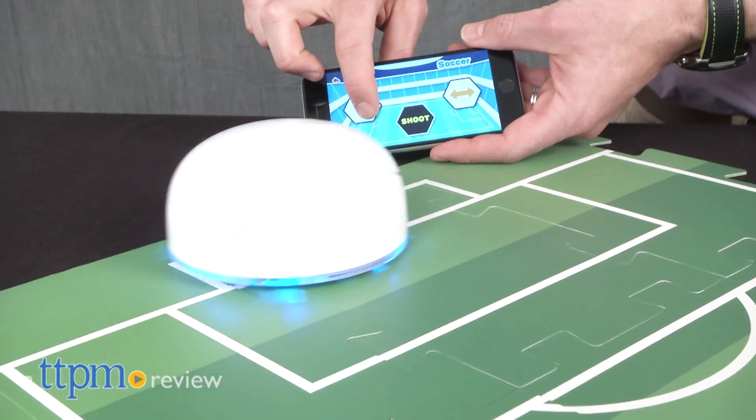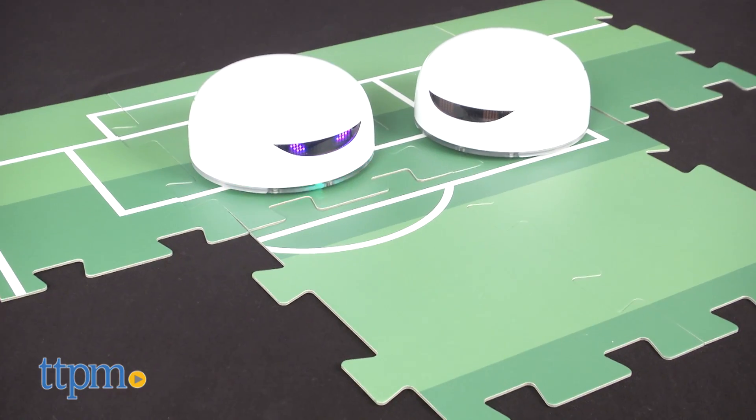Simple robot, infinite possibilities. Hi I'm James for TTPM, and this is the Vortex, kids first robot from DF Robot.